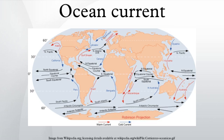Depth contours, shoreline configurations, and interaction with other currents influence a current's direction and strength. Ocean currents can flow for great distances, and together they create the great flow of the global conveyor belt, which plays a dominant part in determining the climate of many of the Earth's regions.